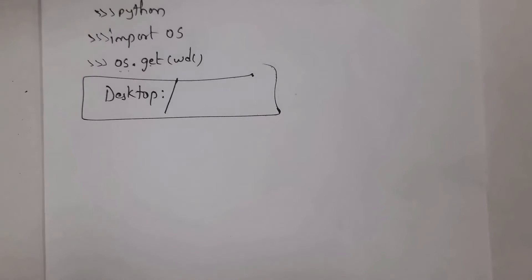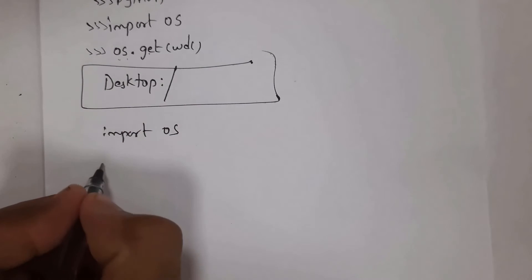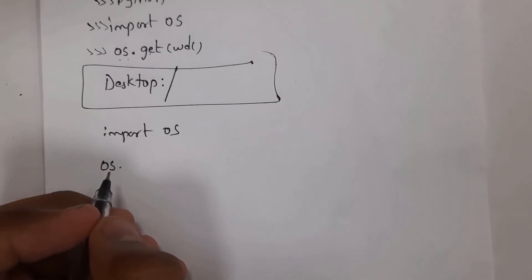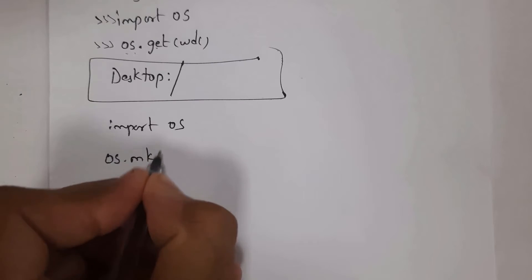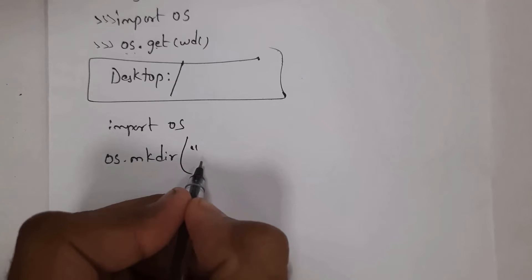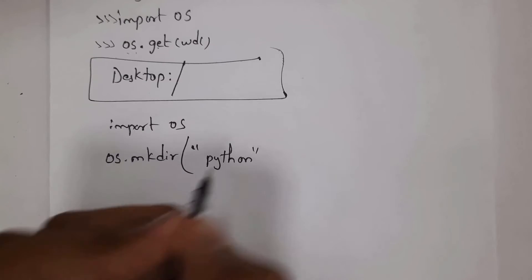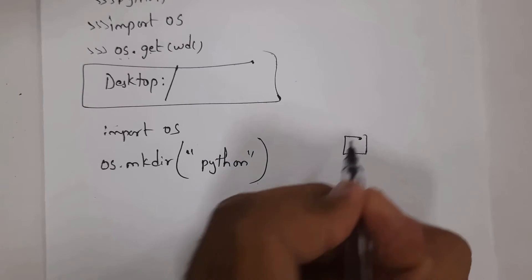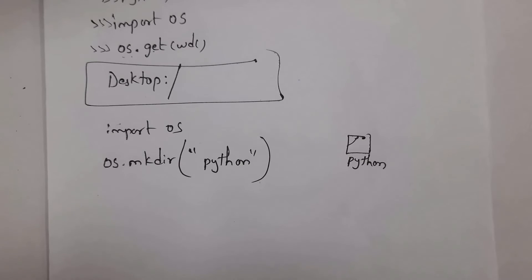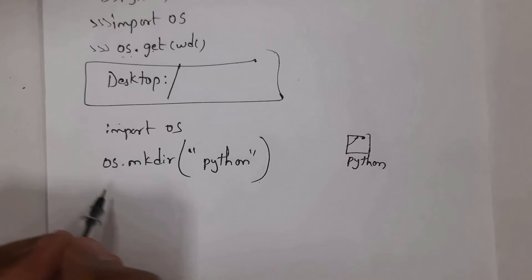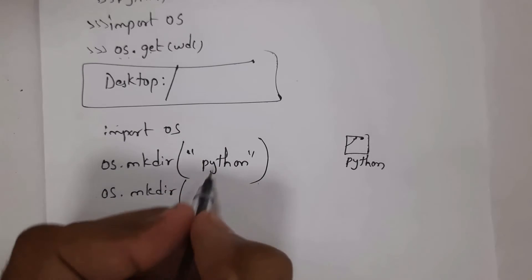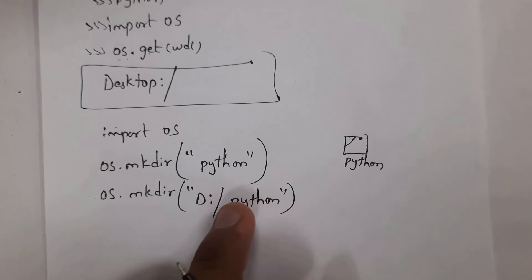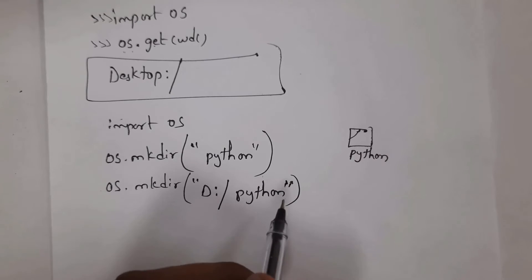For example, I want to create one folder on the desktop. Write 'import os', then 'os.mkdir("python")'. The mkdir function — make directory — takes the folder name inside brackets. Whenever you run this line of code, it will create a folder named 'python' on the desktop. If I want to create the folder in local disk D instead, I write 'os.mkdir("D:\\python")'. Make sure to use double quotations, otherwise it will display an error.